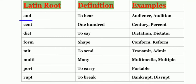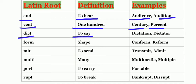The first one is aud, that is Latin root and the meaning is to hear. The English words which are made out of Latin root is audience and audition. The next one is cent meaning one hundred and the example is century and percent. The next one is dict which means to say. The example is dictation, dictator.